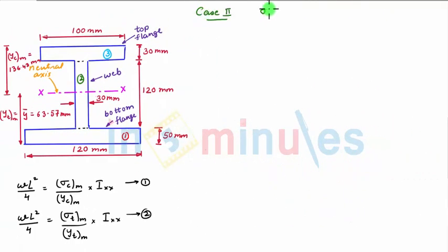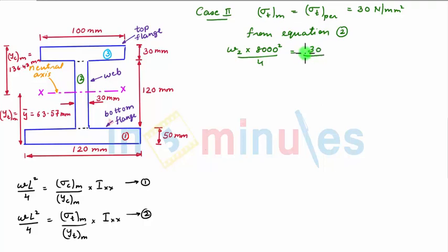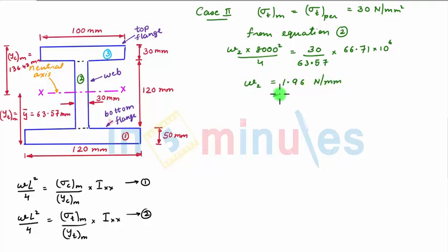Now consider Case 2, where σt_max is equal to σt_permissible, which is equal to 30 newton per mm². Upon substituting this in equation 2, we get w2 × 8000² / 4 = σt_max (30) / yt_max (63.57) × I. Upon solving this, we get the value of w2 as 1.96 newton per mm, or 1.96 kilonewton per meter.